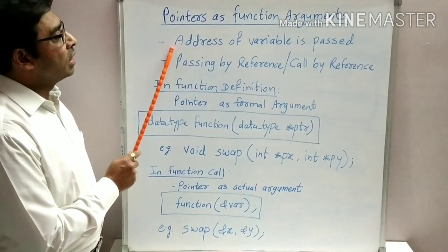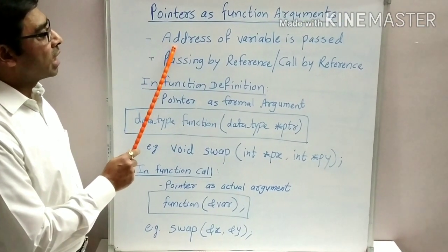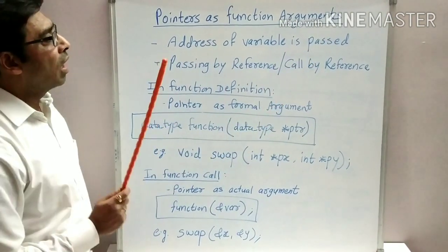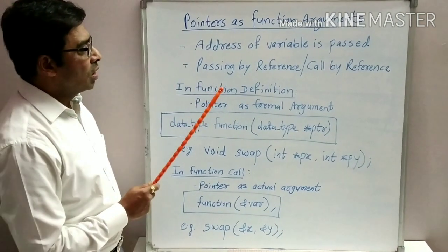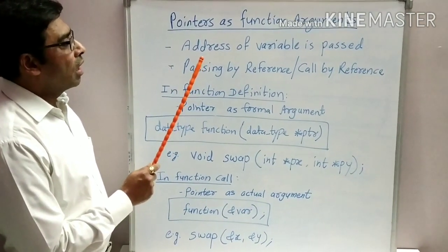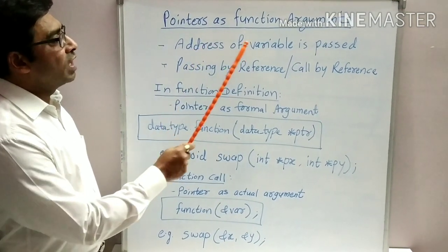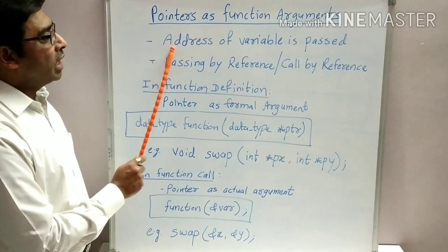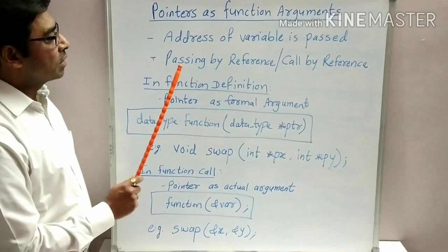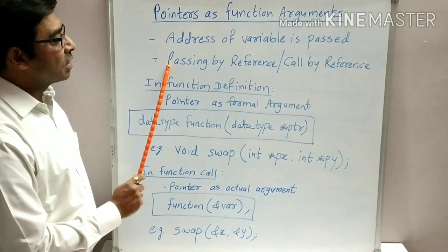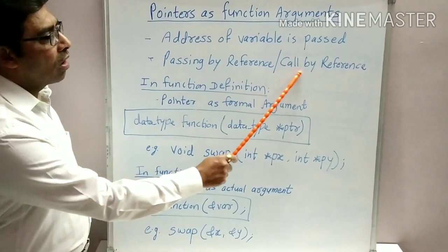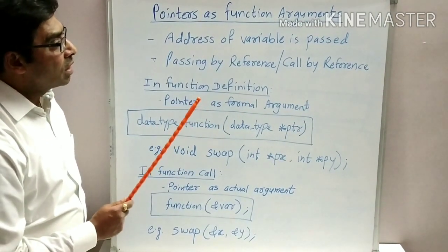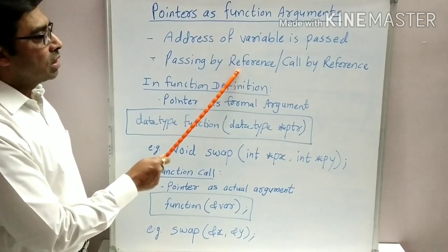The important thing while passing pointers as argument is that we are passing the address of a variable as argument to the function. While passing the pointer, actually the address of the variable is passed as argument to the function. And hence, this type of passing of argument is also known as passing by reference or call by reference. The reference indicates the reference to value, means the address.